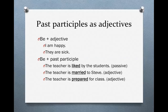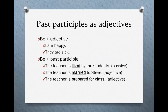Let's look at the second sentence: "The teacher is married to Steve." We have a form of the verb be and a past participle, but the past participle here doesn't have a passive meaning. We can't change this sentence and make it active. Married is a past participle of the verb marry, but it is also an adjective. When we talk about married people, we say married. So "the teacher is married to Steve" — married is an adjective; this is not a passive sentence.